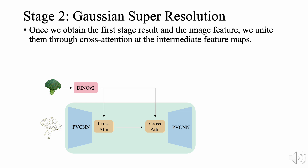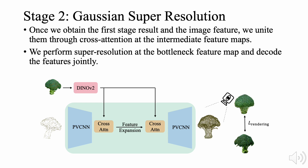Once we obtain the first stage result and the image feature, we unite them through cross-attention at the intermediate feature maps. We perform super-resolution at the bottleneck feature map and decode the features jointly.